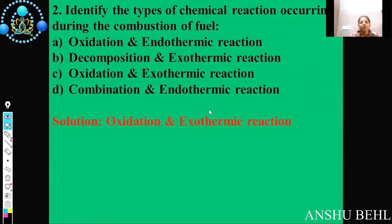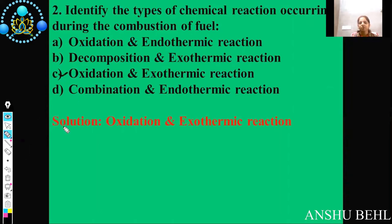Second question: identify the type of chemical reaction occurring during the combustion of fuel. During combustion of fuel, heat is evolved out, so it is an exothermic reaction. And we are burning hydrocarbons in full supply of oxygen, so it is also an oxidation reaction. Therefore, option C — oxidation and exothermic reaction — is the right answer.